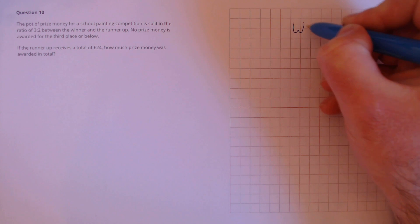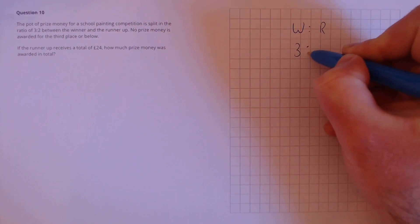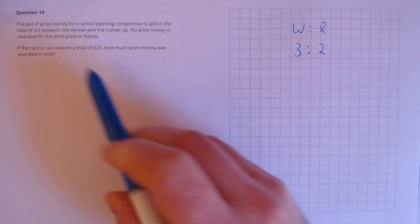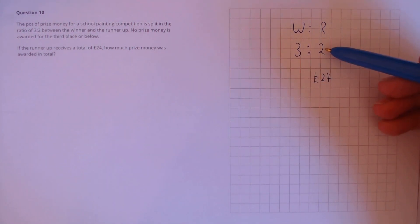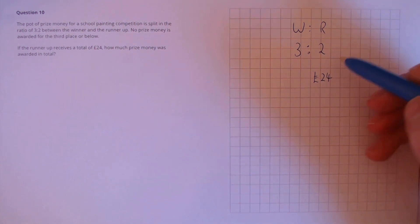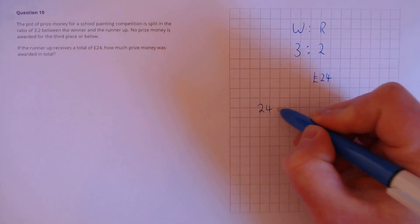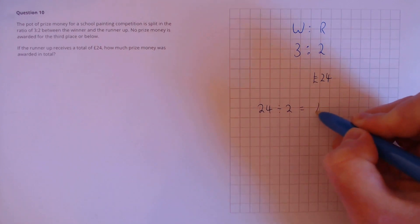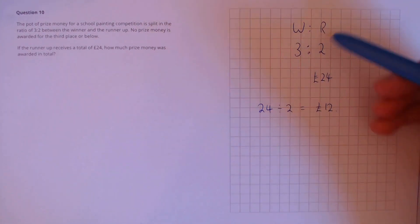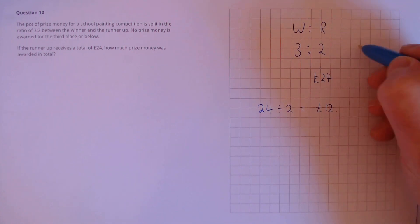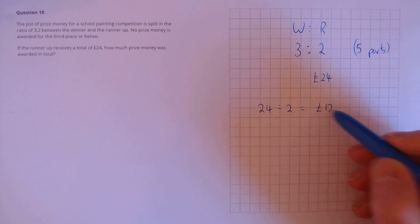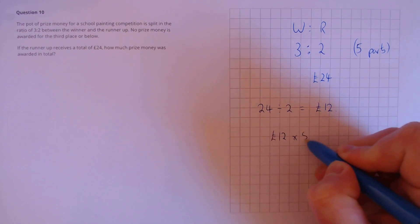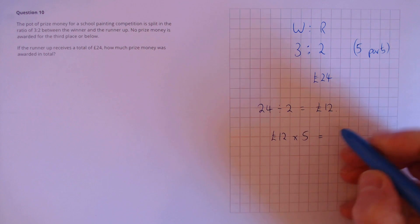So, we have the winner and the runner-up share in the ratio of 3 to 2. If the runner-up receives £24, then we can calculate what the value of one share was. If this is two shares, one share must be half of 24, which is £12. If we look at the ratio here, 3 to 2, there are five shares or parts in total. If one is £12, then the total amount of prize money must be five times that because of the five parts, which is £60.